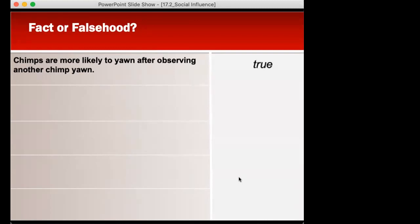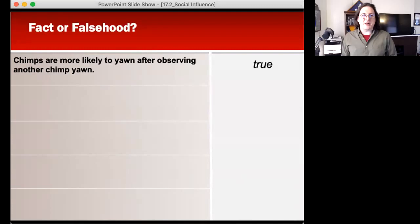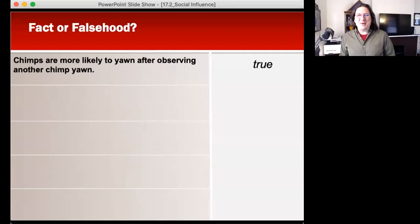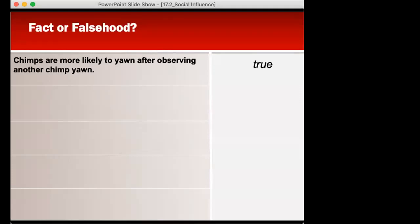We're kind of more evolved than chimps, at least we think so, but we have that same thing, right? What causes that? It's like when someone yawns and then you want to do the same. Mirror neurons.